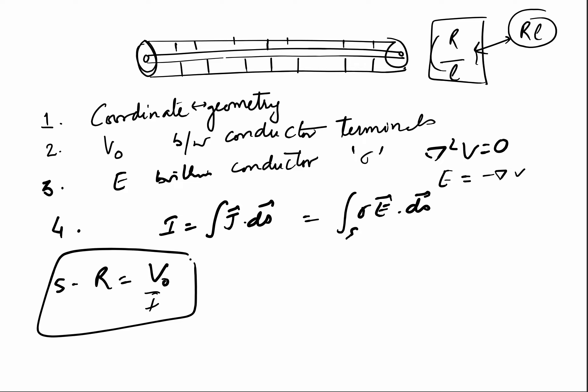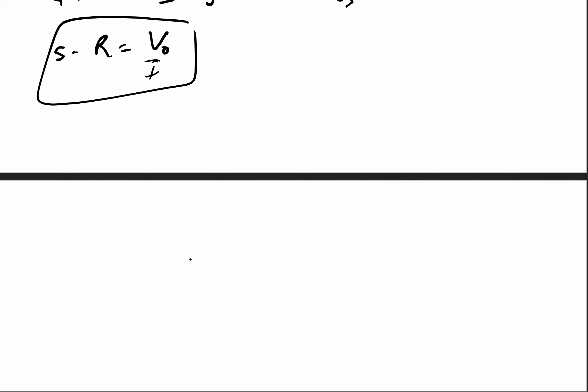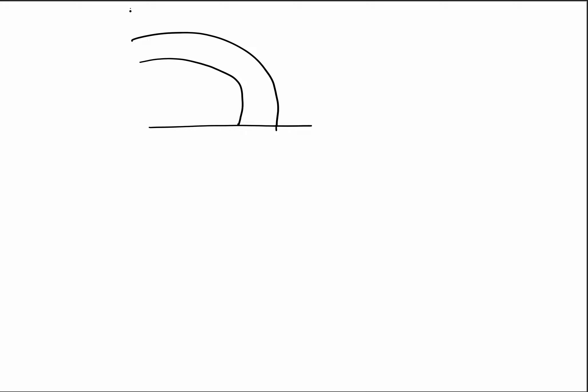We will now solve a numerical example following all these steps. We are given a uniform-thickness conducting material lying in the first quadrant, with x and y axes and the origin shown. The conducting material occupies the first quadrant region.